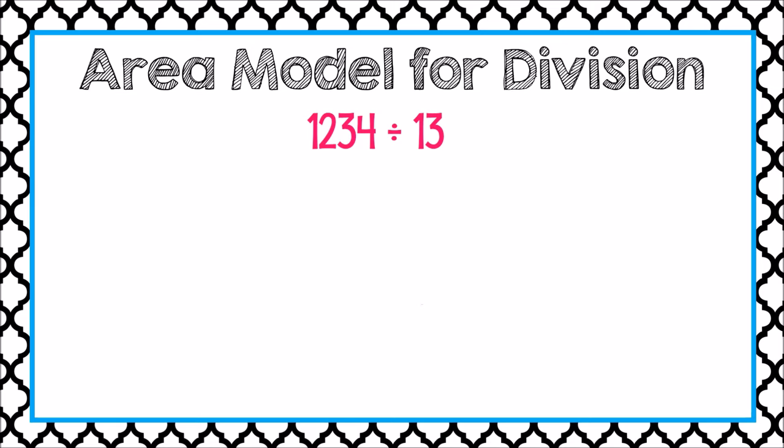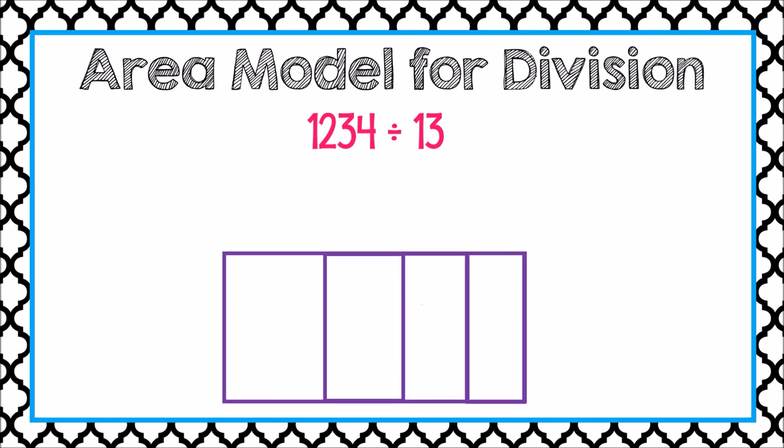I start by creating a rectangular area model. I make a space for each place in the number that I'm dividing, which is 1,234. I write this number in expanded form: 1,234 divided by 13. Now that we've broken up our number by its place value, let's divide.